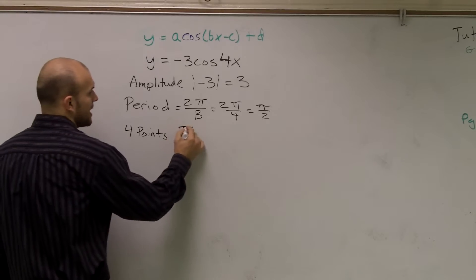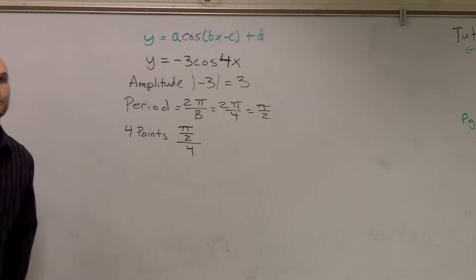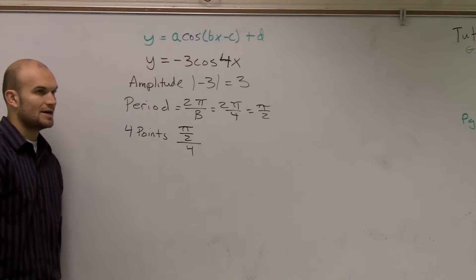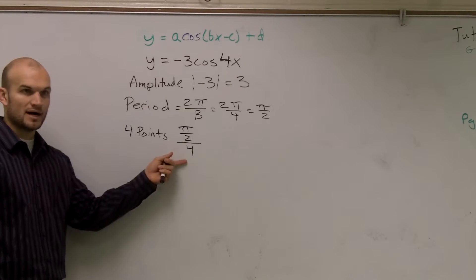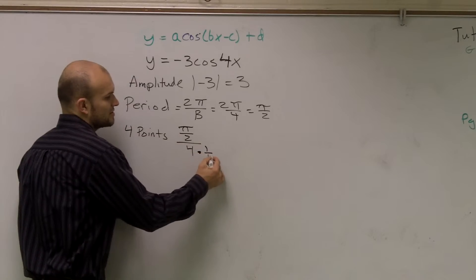So what you'll do is you'll take π over 2 and divide by 4. Some of you might be like, how do you do that? Remember, if you have a number on the bottom, to get rid of that number on the bottom, you just need to multiply it by its reciprocal.